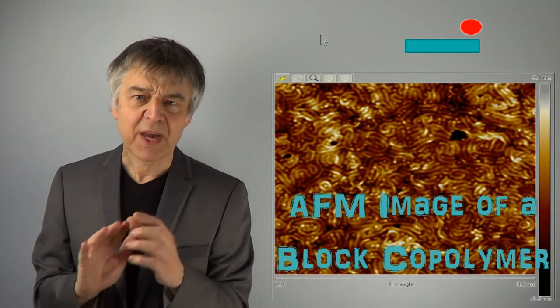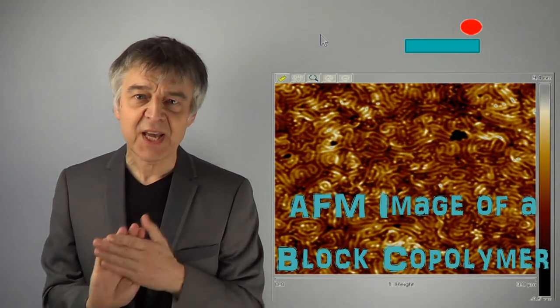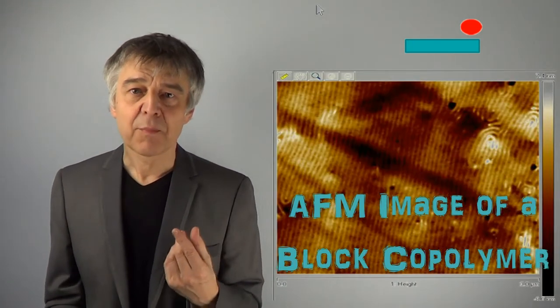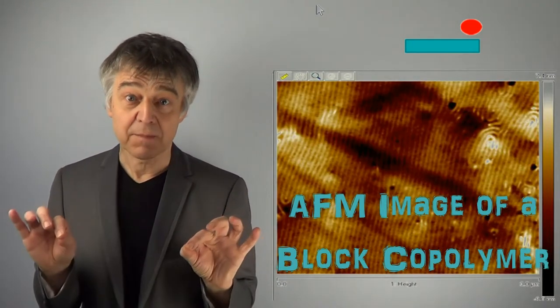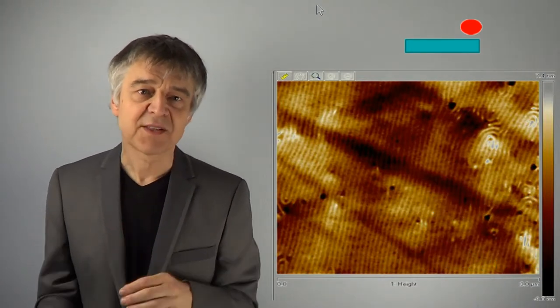Here you can see the AFM picture of a block copolymer and we can very well see the structure of the different polymer blocks. Upon application of an electric field, the blocks align significantly. By the way, this was taken from a bachelor work I supervised.